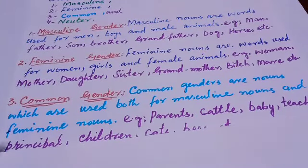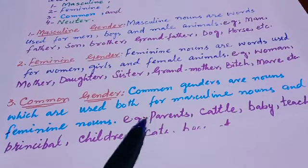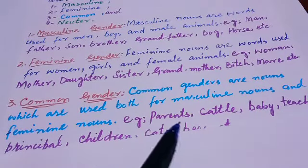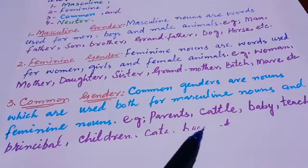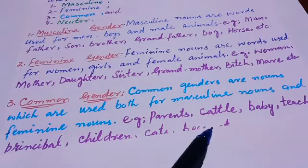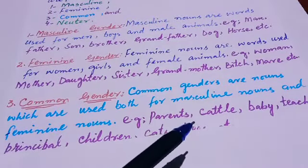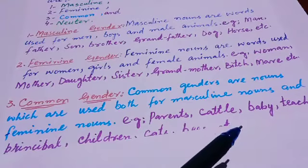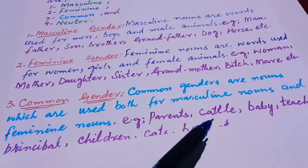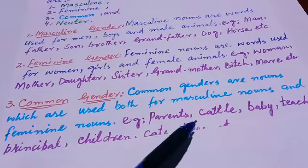For example: parents — this word applies to both male and female. Cattle — the cattle are grazing in the field, they are eating grass. In cattle, males and females both are included.